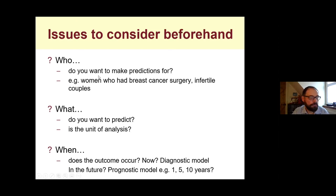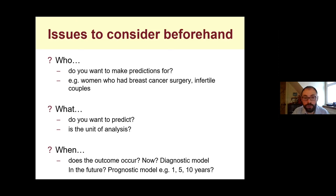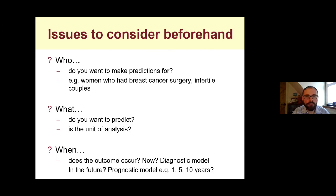What do you want to predict? Is the outcome mortality, recurrence, pregnancy, live birth, or miscarriage? What is the unit of analysis? IVF and reproductive medicine is quite unique — the unit could be the individual woman or an individual cycle of IVF treatment. When does the outcome occur? Is it now, requiring a diagnostic model, or in the future — for example, the probability of a woman becoming pregnant in the next year after diagnosis of infertility? All of this affects the actual modeling process to be used.